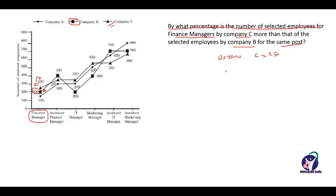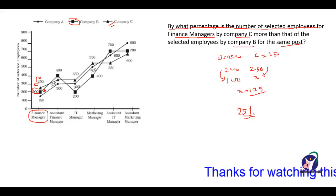For 200 in company B, company C has selected 250 employees. So for 100, how much will it be? This is half, so it will also be half — X equals 125. This means it is 25% more. So the percentage of selected employees for finance managers by company C is 25% more than that of company B for the same post.